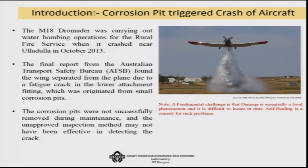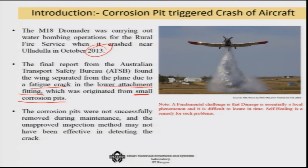This whole topic started because of the failure of an M18 Dromadier aircraft in Australia in 2013. The final report showed that the plane, generally used for spraying water over forest fires, collapsed because a small fatigue crack occurred at the lower attachment fitting. That fatigue crack originated from a small corrosion pit not removed during maintenance, causing complete failure of the plane. A sensing and healing system could have taken care of such small changes and prevented the catastrophe.